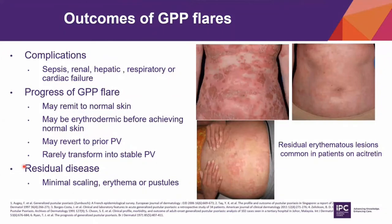Moving on to outcomes of GPP flare: if patients did not succumb to complications, the skin lesions may resolve to normal skin, or patients may remain erythrodermic for weeks to months before achieving normal skin. Patients with prior plaque psoriasis may revert to plaque psoriasis; however, in my experience, patients whose GPP started as generalized pustular psoriasis seldom transformed into stable plaque psoriasis. Residual disease such as minimal scaling, erythema, or pustules are common in patients post-flare.